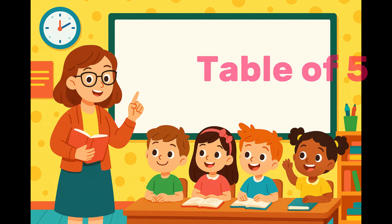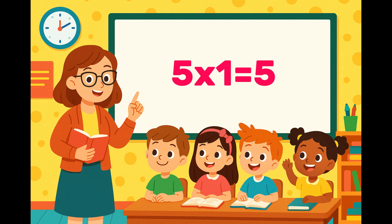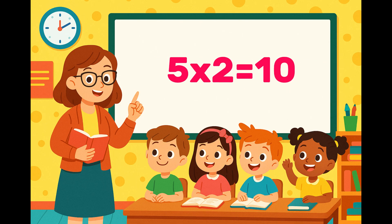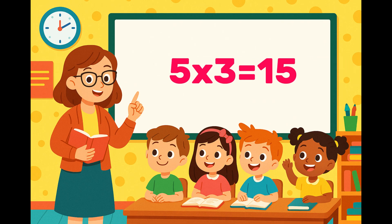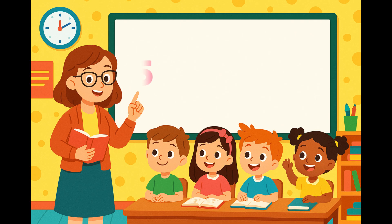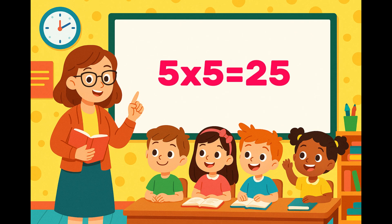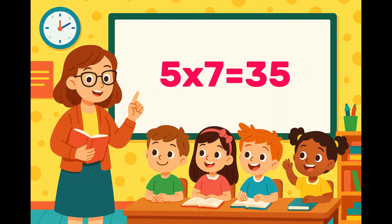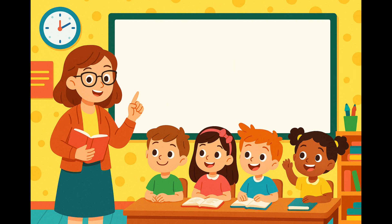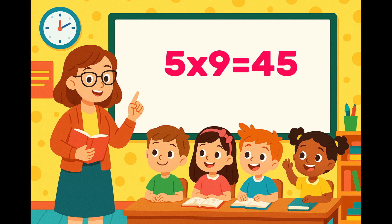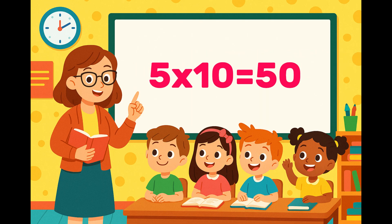Table of Five. Five Sevens Are Thirty Five. Five Eights Are Forty. Five Nines Are Forty Five. Five Tens Are Fifty.